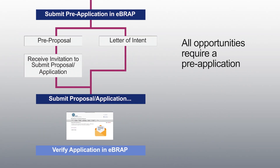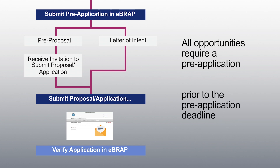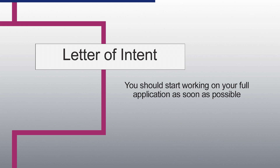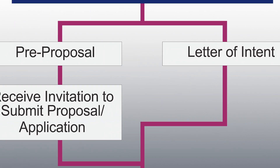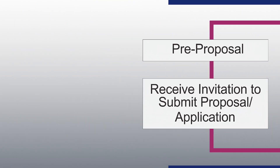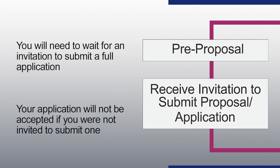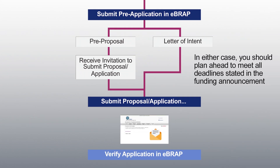All opportunities require pre-application submission, which must occur prior to the pre-application submission deadline specified in the funding opportunity. If you submitted a pre-application in the form of an LOI, you should start working on your full application as soon as possible. You may submit the full application any time after the successful LOI submission and before the full application deadline, as specified in the funding announcement. If you submitted a pre-application in the form of a pre-proposal, you will need to wait for an invitation to submit a full application — your application will not be accepted if you were not invited. In either case, plan ahead to meet all deadlines stated in the funding announcement.